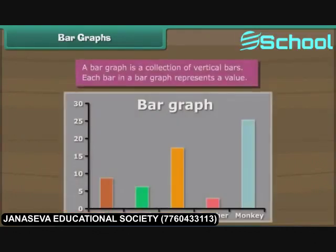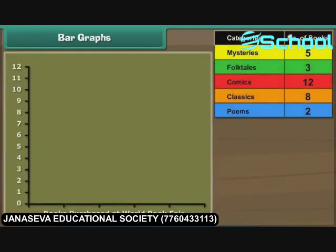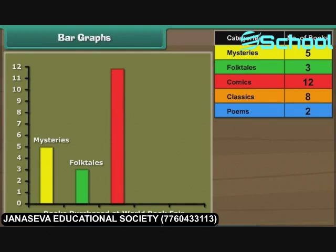A bar graph is a collection of vertical bars. Each bar in a bar graph represents a value. Let us now organize Ravi's data in the form of a bar graph. We first draw a bar 5 cm tall to represent mysteries. Then we draw a bar 3 cm tall to represent folktales. Next, we draw a bar 12 cm tall to represent comics. We now draw a bar 8 cm tall for classics. Last, we draw a bar 2 cm tall for poems. The bar graph is ready.